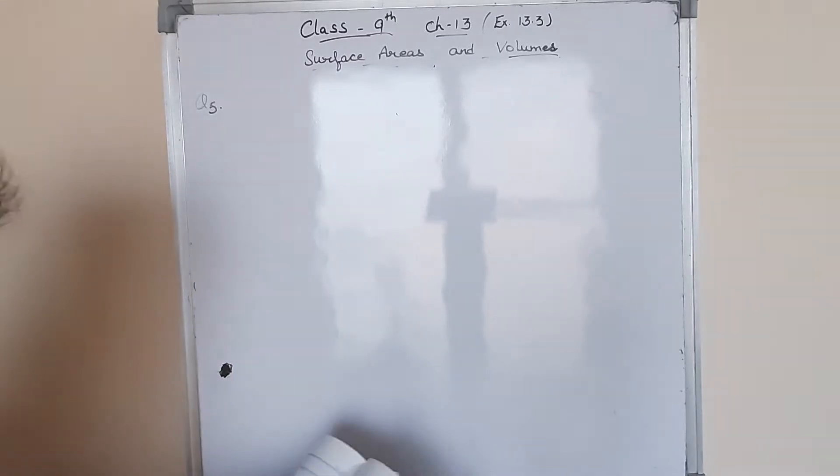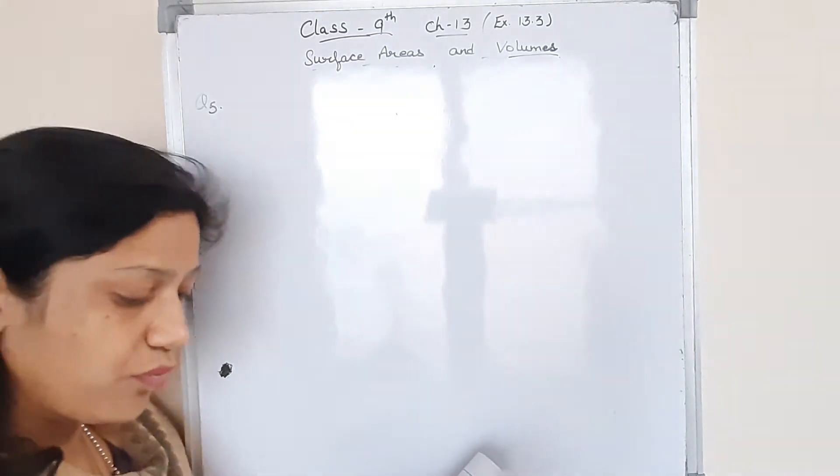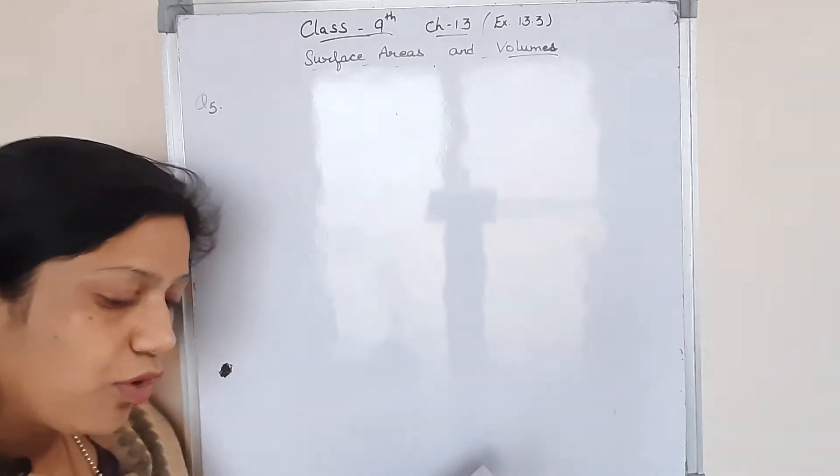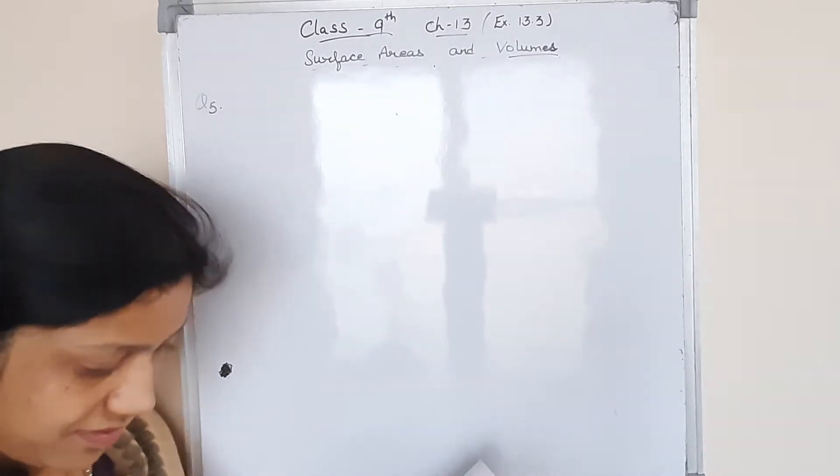In the fifth question, he is saying what length of traplin 3 meter wide will be required to make a conical tent of height 8 meter and base radius 6 meter.